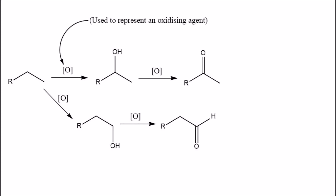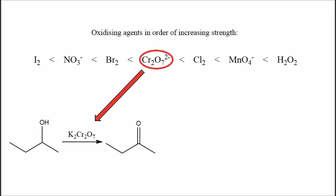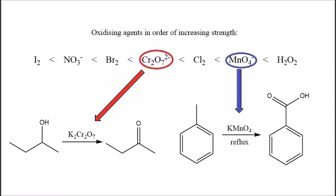Oxidation can be used to convert a hydrocarbon to an alcohol, with further oxidation leading to the formation of ketones, aldehydes or carboxylic acids. Some oxidizing agents are stronger than others, and an important part of organic synthesis is selecting the right one for your reaction, as stronger agents will result in more highly oxidized products.